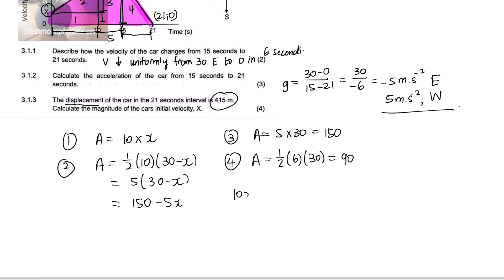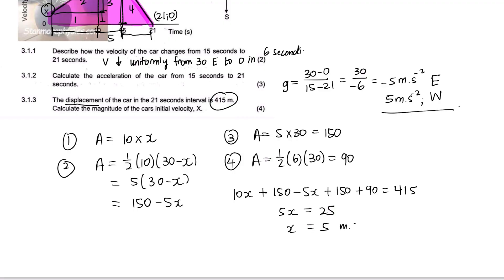So 10x plus 150 minus 5x plus 150 plus 90 equals 415. Simplifying: 5x equals 415 minus 90 minus 150 minus 150, which equals 25. Therefore x equals 25 divided by 5, which is 5 meters per second. They want the magnitude, so we just give the value without direction.